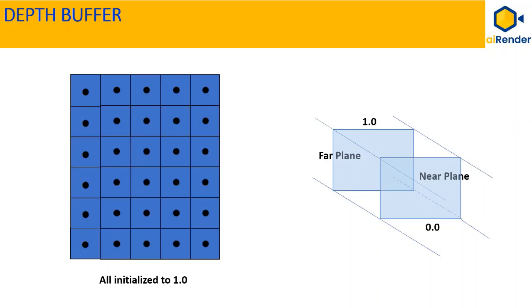0.0 represents the near plane corresponding to the objects that are closest to the camera. And 1.0 represents the far plane which relates to the objects that are farthest in the scene from the eye view.